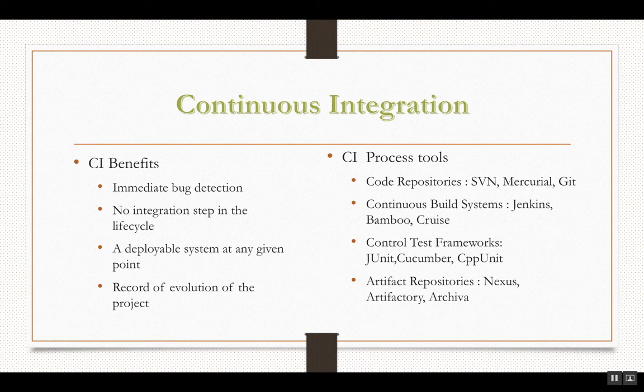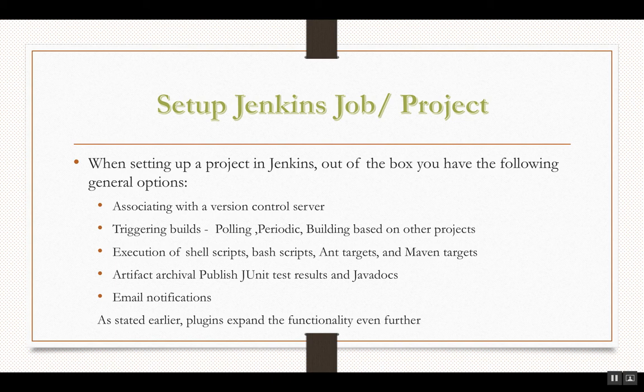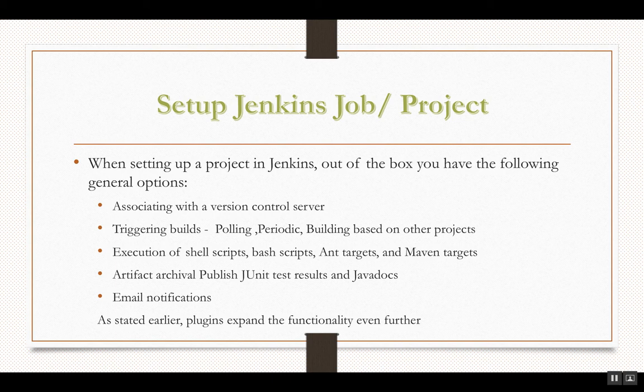Setting up a Jenkins job or project involves general options such as associating it with a version control server. You can trigger builds by polling, periodic checks, or based on other projects. You can execute shell scripts, Bash scripts, Ant targets, and Maven targets. Artifact archival involves publishing JUnit test results and Javadocs. Jenkins is also capable of sending email notifications, and plugins expand the functionality even further — there are a large number of plugins available that can integrate with Jenkins.